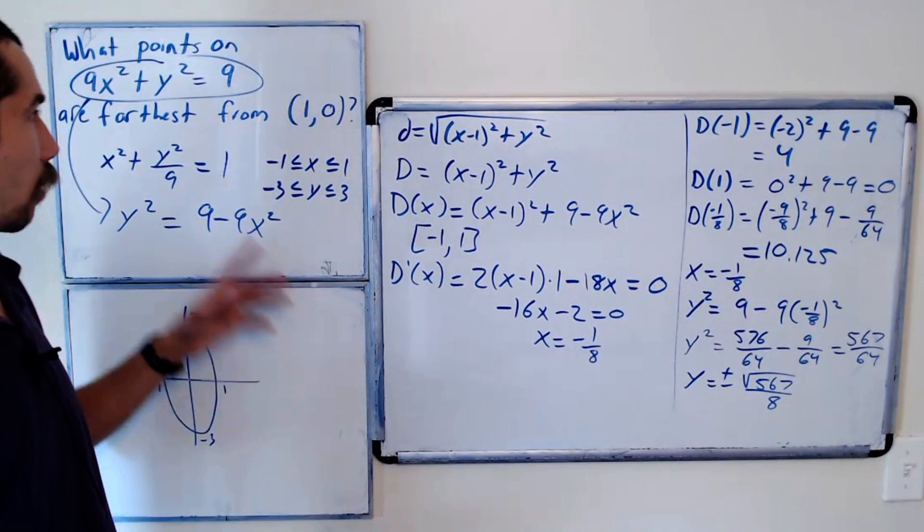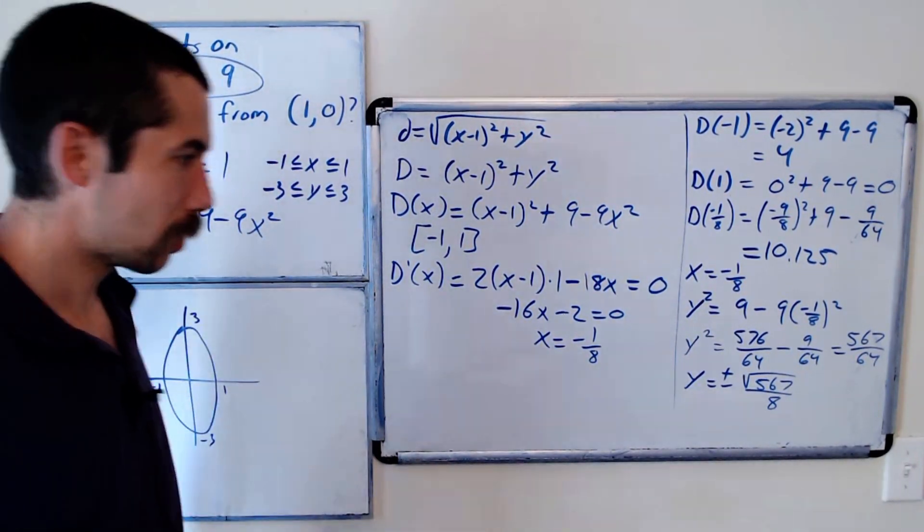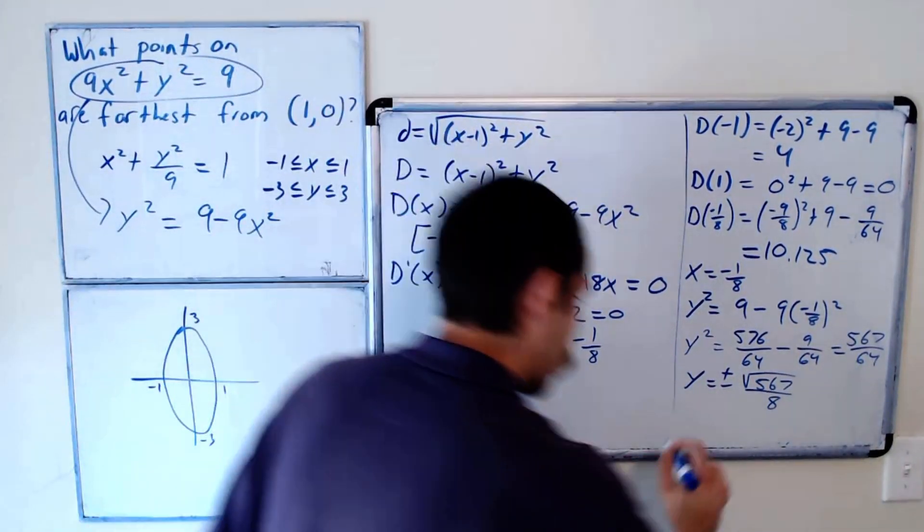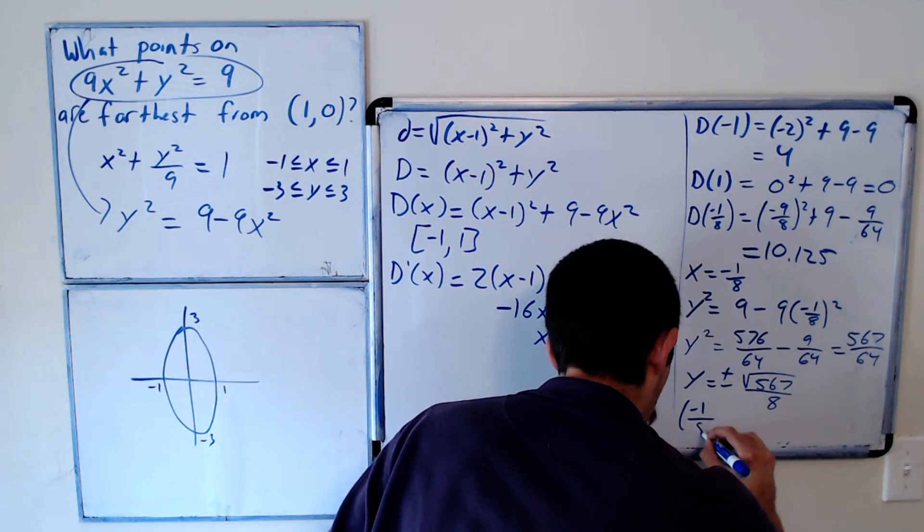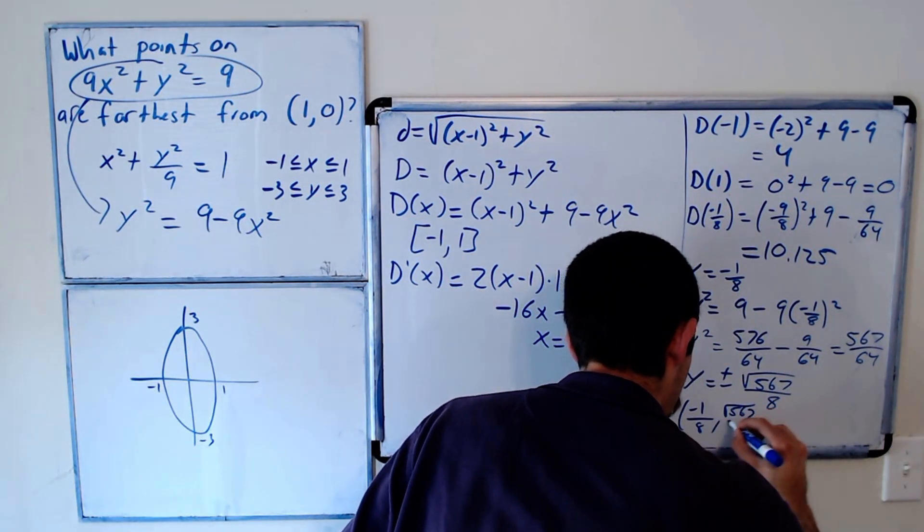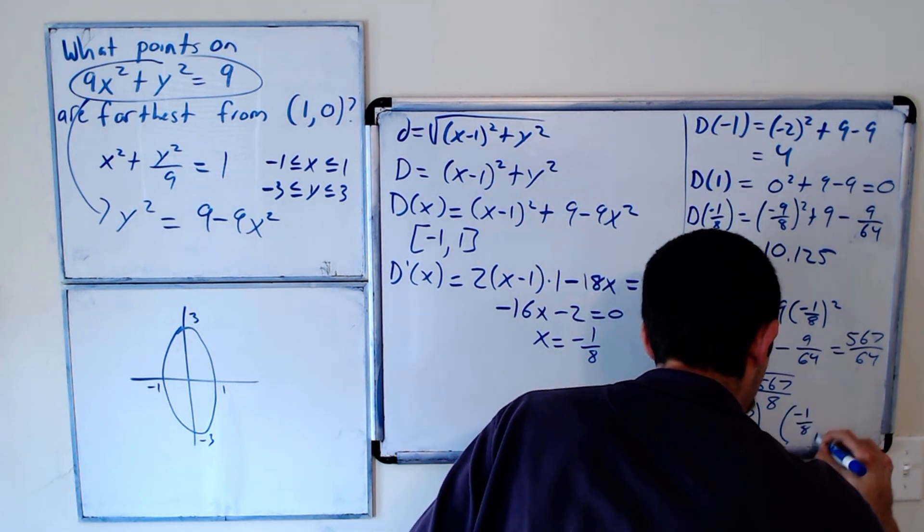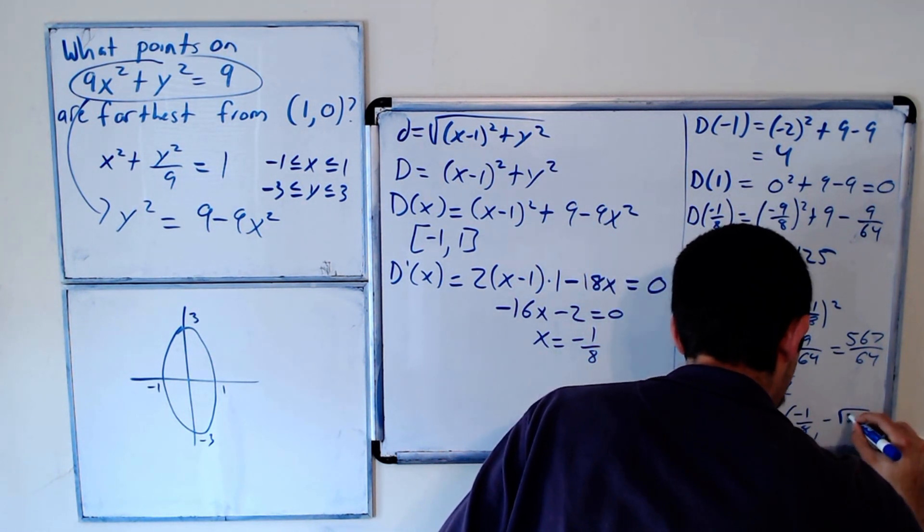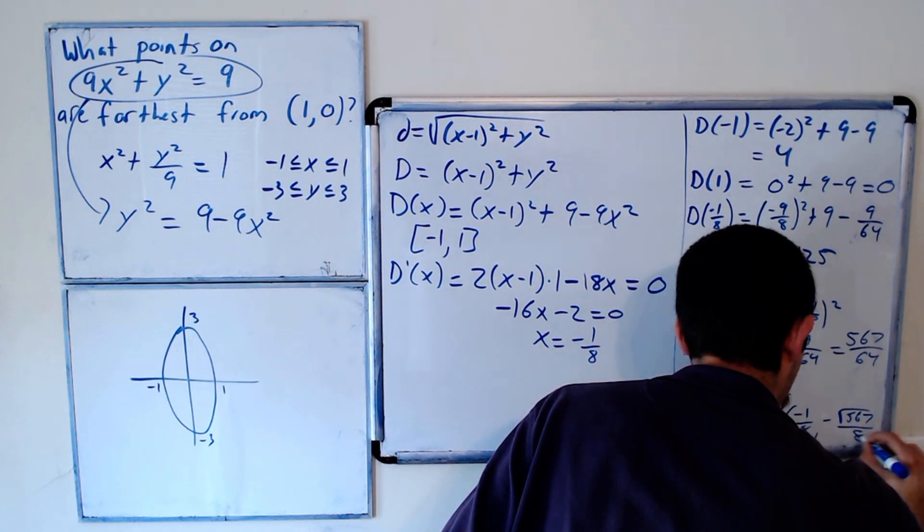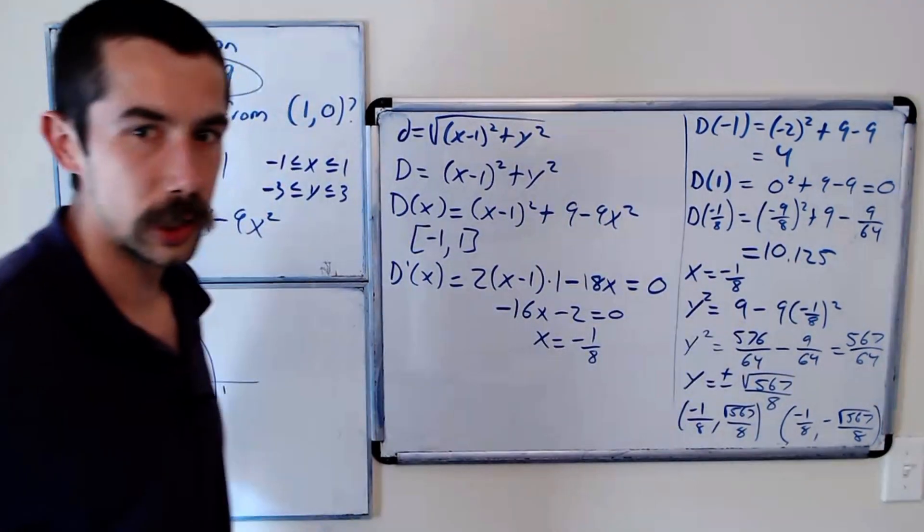So what points are furthest from the point (1, 0)? It's the point negative 1 eighth, comma square root of 567 over 8, and also the point negative 1 eighth, negative square root of 567 over 8. So there's two points here.